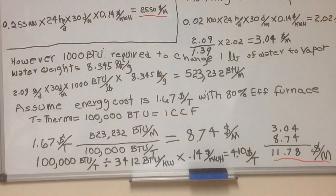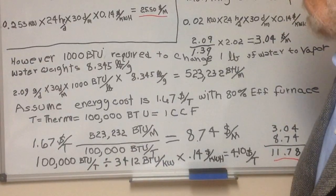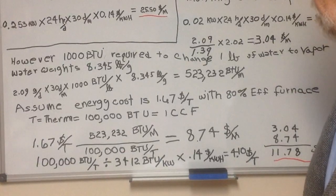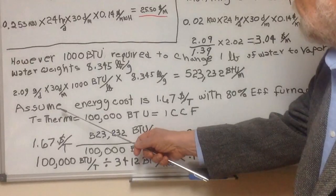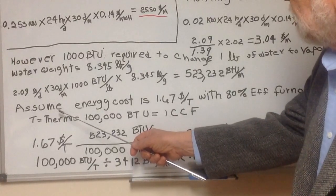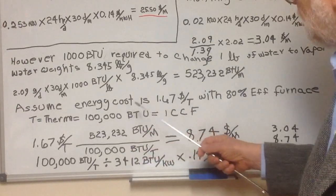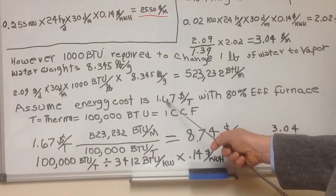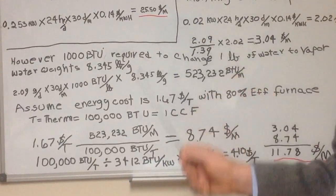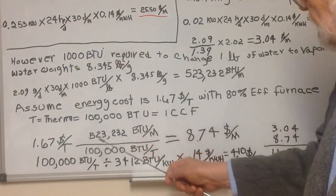I assume that probably the majority of people watching this video have gas heat. Using my son's gas bill, I came up with a cost per therm — assuming 80% efficiency — of $1.67. A therm is 100,000 BTUs. On your bill you may see CCF, which stands for 100 cubic feet. One cubic foot of gas is 1,000 BTUs, so 100 times 1,000 BTUs equals 100,000, meaning one therm equals one CCF.